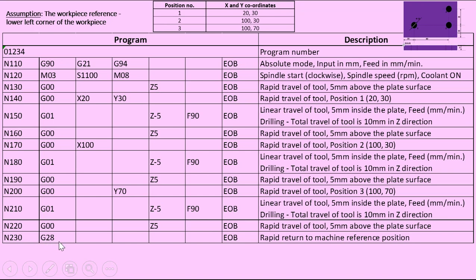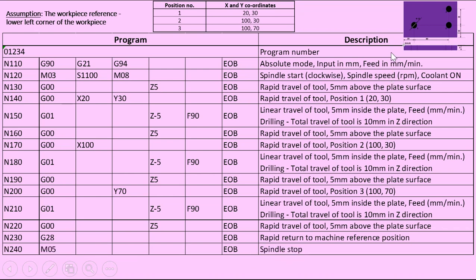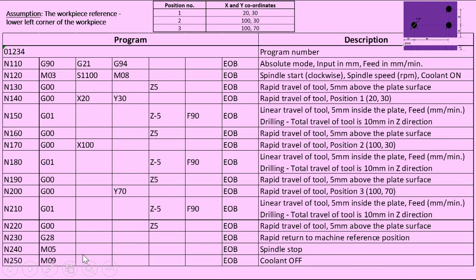After all three holes are drilled, G28 returns the tool to the machine reference position. Then M05 stops the spindle, and M09 turns the coolant off. Finally, M30 ends the program and rewinds the tape. End of block is written after each command. The total program is now complete.